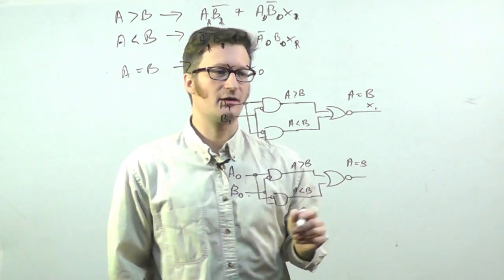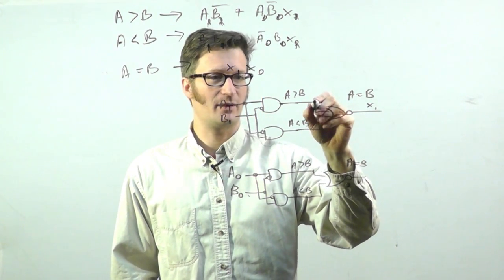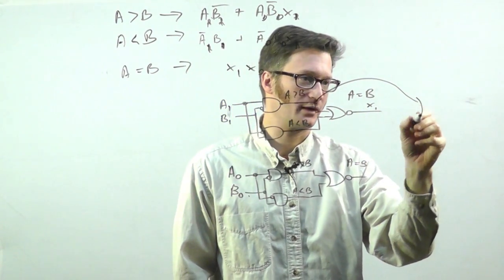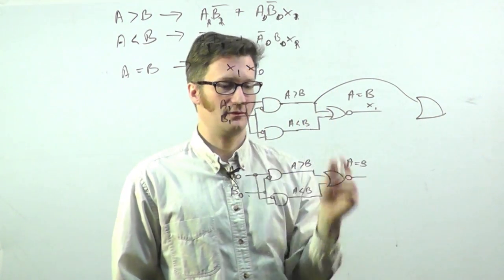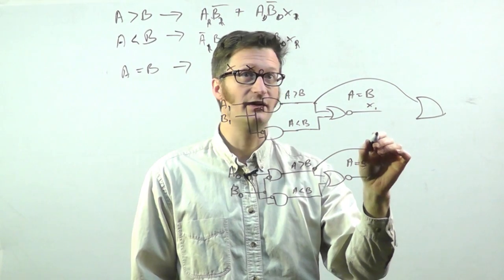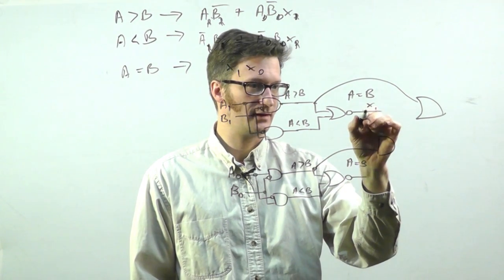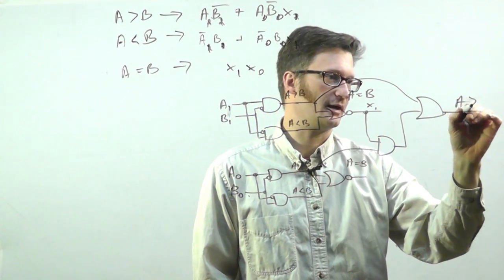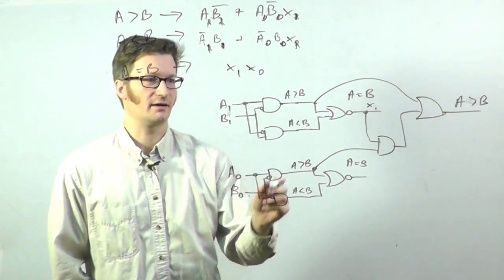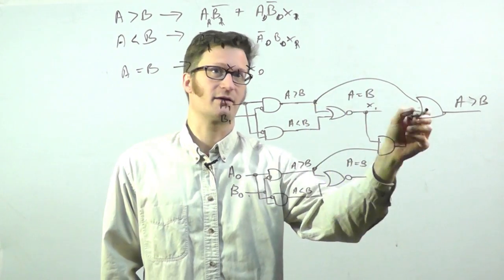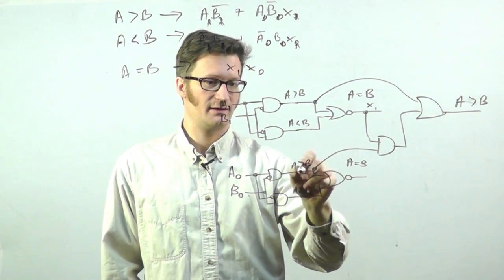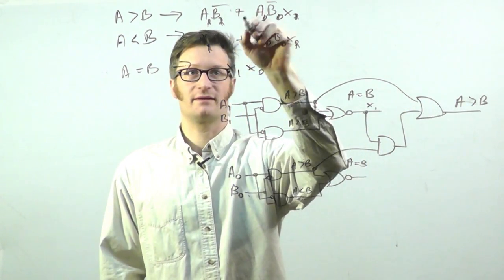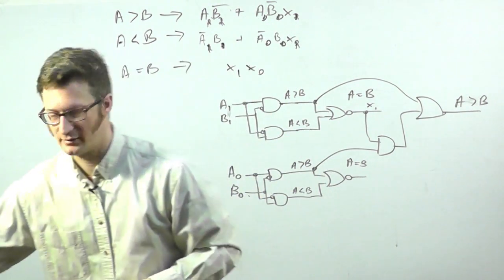So A is greater than B. So we need to take the A B̅ term here and run that into an OR gate. And then this A greater than B is ANDed with X₁. And that is brought into the OR gate. And this is the final A greater than B. So this is coming off right here. That's this term. And this is A₁ B̅₁ and X₁ coming into an OR gate. That's this. And out it comes.